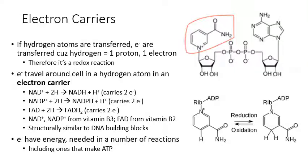If you have a first set of reactions in one place in the cell and need electrons to go to a second place, NAD+ might come to the first place and pick up electrons, converting to NADH — the reduced form — then travel as NADH to that second place and drop off its electrons. When it drops the electrons off, it becomes oxidized again and is NAD+ again, then can go back to the first place and pick up more electrons — the cycle continues.